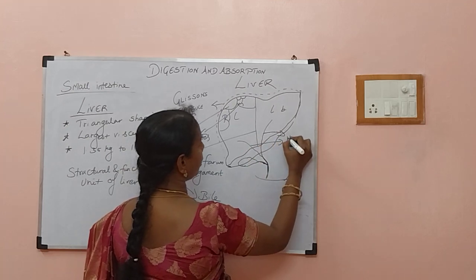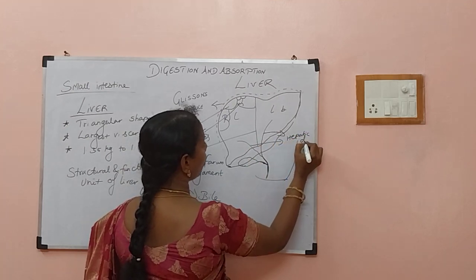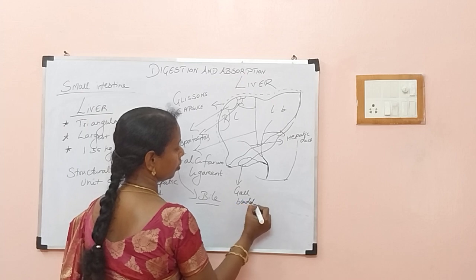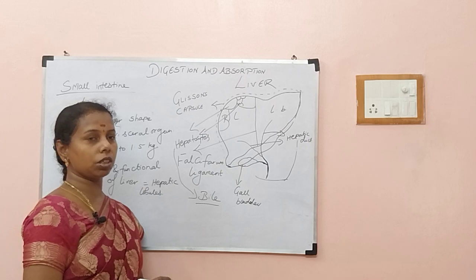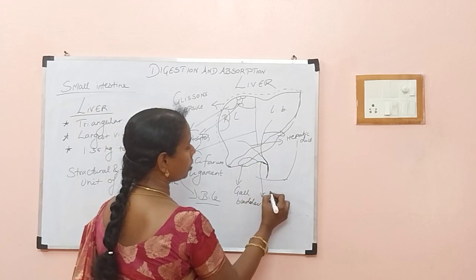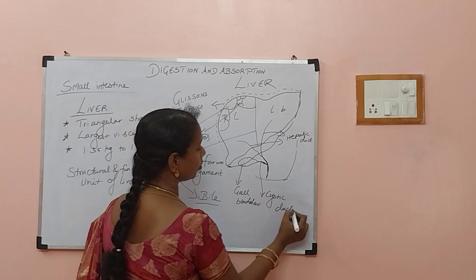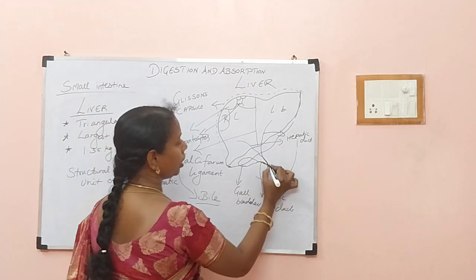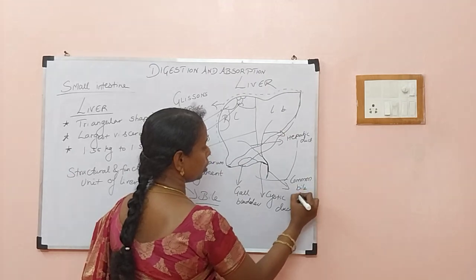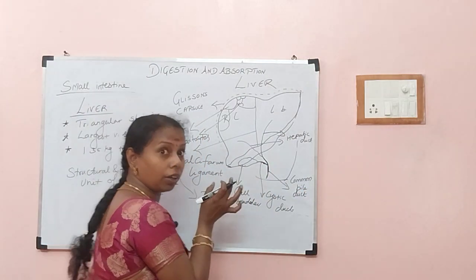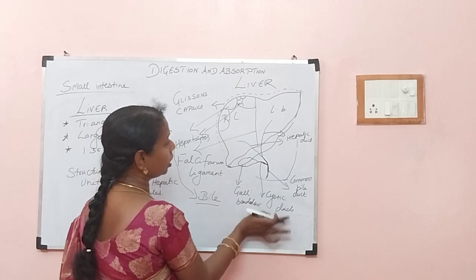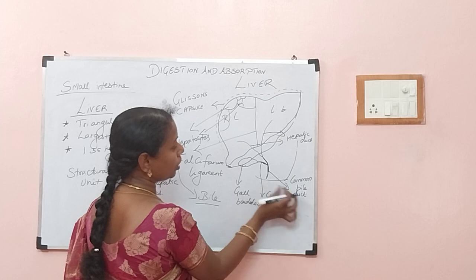The bile produced by the hepatocytes travels through the hepatic ducts to the gallbladder. The gallbladder is a green-colored, sac-like structure that reserves the bile. From the gallbladder, there is a duct called the cystic duct. The hepatic duct and the cystic duct join together and form the common bile duct.